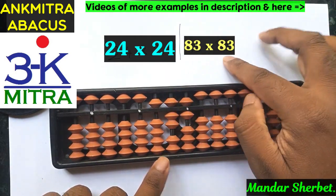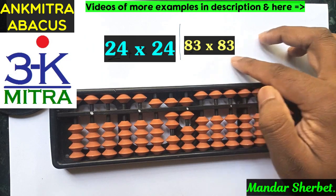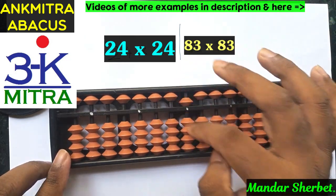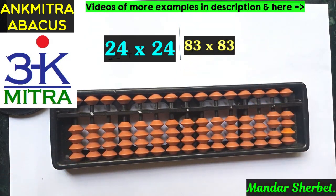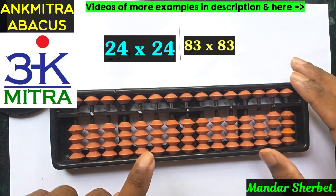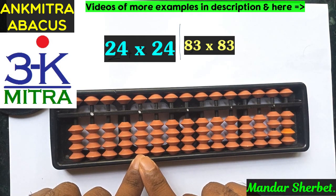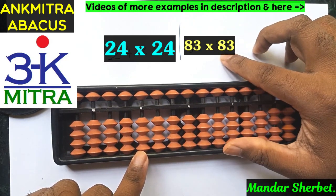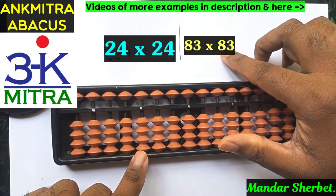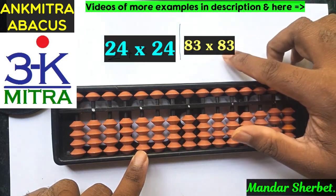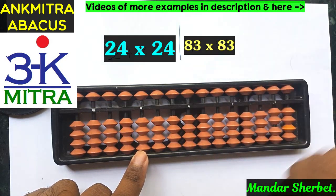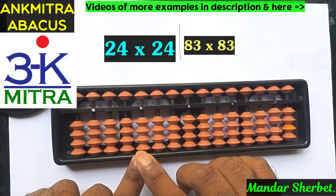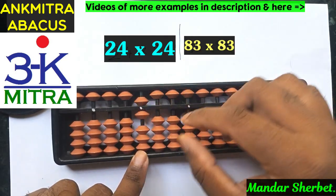Now let's look at the second sum: 83 multiplied by 83. I'm sure you'll better understand once you watch both these examples. For the second example, again I'll start from the fourth rod. I'll take the tens place digit of 83, which is 8, and multiply it by the tens place digit of the other number, which is also 8. So 8 multiplied by 8 is 64, and I'll take 64 from the fourth rod: sixty and four.